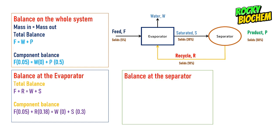Lastly, if we consider the separator, the total balance equation is S equals P plus R. The sum of arrows pointing toward the separator should equal the sum pointing away. The component balance equation is written by multiplying the percentages of the component under consideration by the masses of S (the saturated stream), the product, and the recycle stream. This is the general overview of recycle systems.